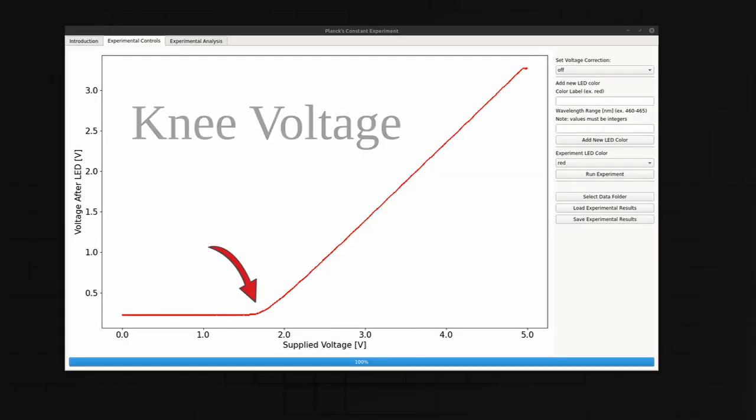The threshold or knee voltage is the minimum required voltage across the diode in order for it to turn on and allow current to pass.